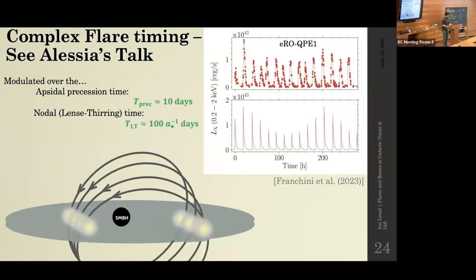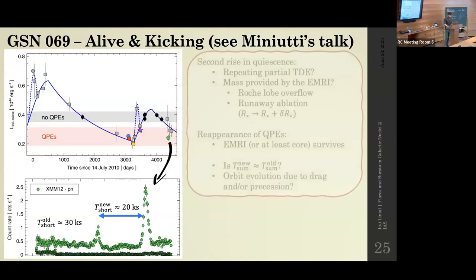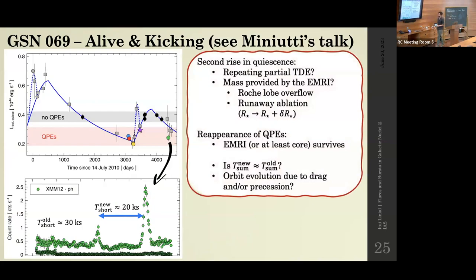More complicated analysis can account for different apsidal and nodal precession processes acting on both the disk and the orbit — I think Alicia will discuss this in her talk. This may be an interesting way to constrain the SMBH spin.